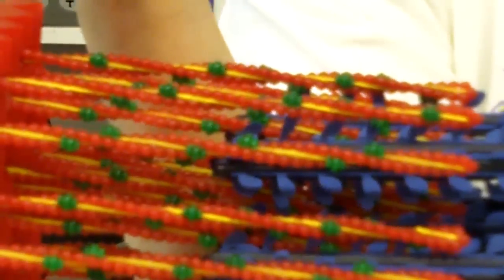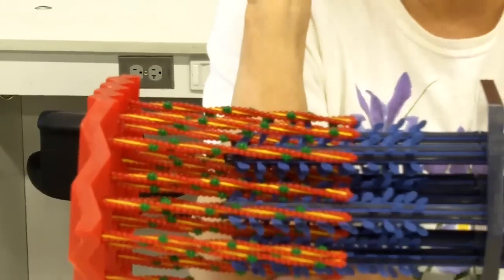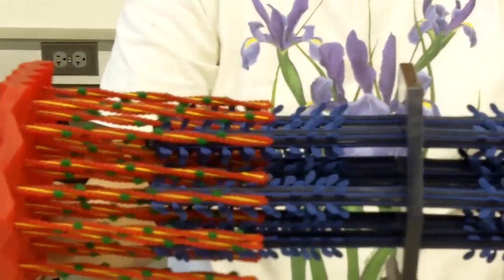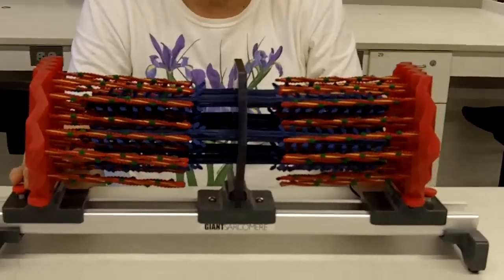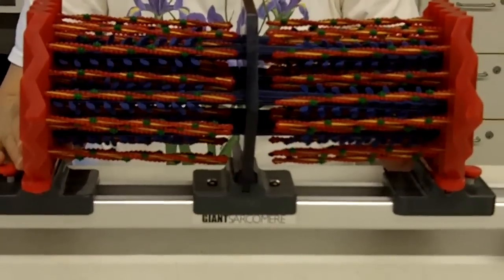And then the myosin heads will latch on and then swivel and move the thin filament past the thick filament. So what we get is not a shortening of each filament, but a sliding of the thin and thick past each other, and that's what causes muscle contraction.